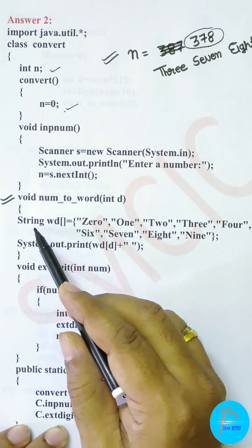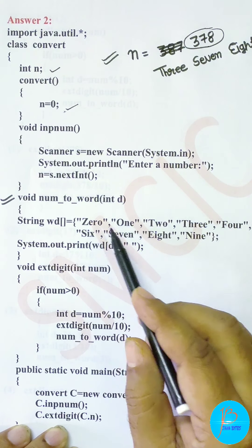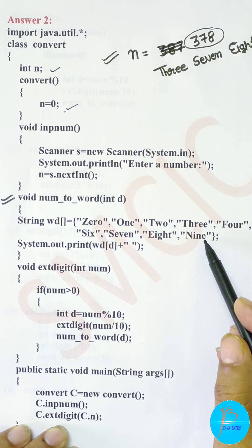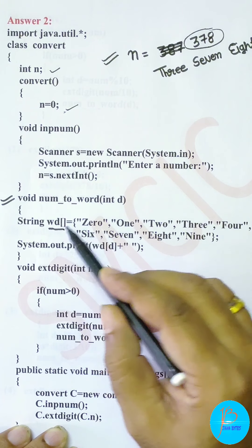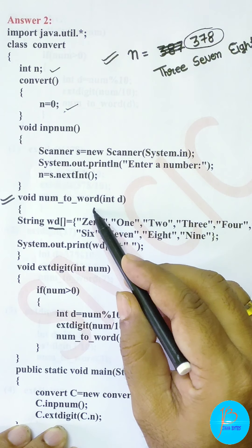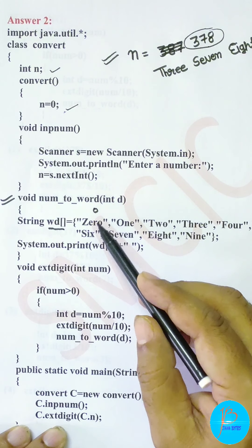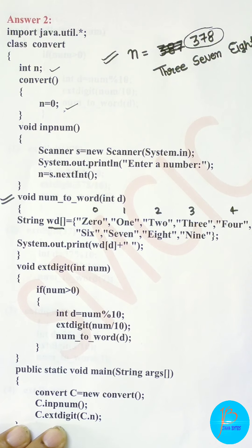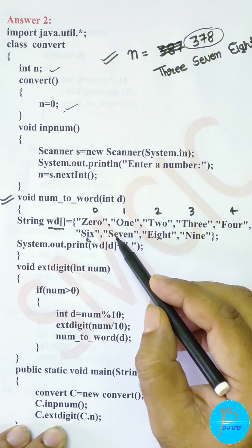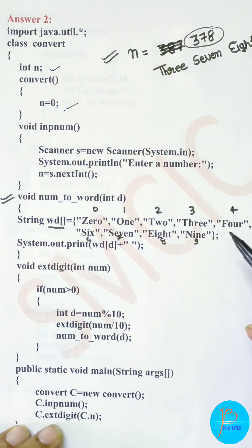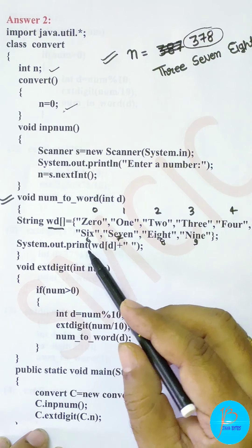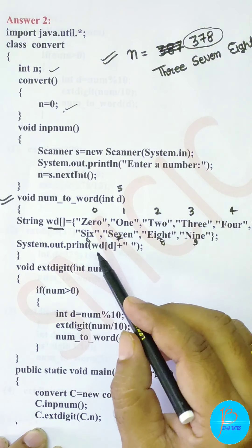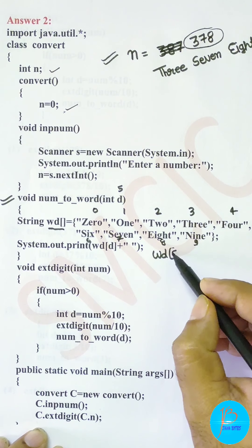In the numToWord function, we are making use of a string array called 'wd'. In this array, digits 0 to 9 are stored in word form. The first index 0 stores 'zero', index 1 stores 'one', then 'two', 'three', 'four', 'five', and so on - every index represents its digit in word form. Index 6 has 'six', 7 has 'seven', 8 has 'eight', and 9 has 'nine'.